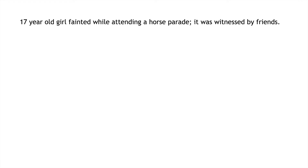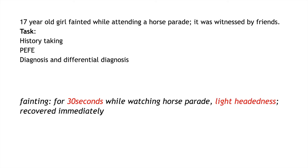Moving on to the next case: we have a 17-year-old girl who fainted while attending a horse parade — it was witnessed by her friends. The task is to take history, ask for physical examination findings, give diagnosis and differentials. The positive finding is that the fainting happened for around 30 seconds while watching the horse parade, there was a history of lightheadedness, and the patient recovered immediately. The rest of the history and physical examination will be normal. This is a case of vasovagal syncope. In these cases you always get some triggers — like standing for long periods, heat exposure, overcrowding, sight of blood, or extreme emotional stress — and in this case, attending a horse parade likely involved prolonged standing or overcrowding. You have to find these triggers.